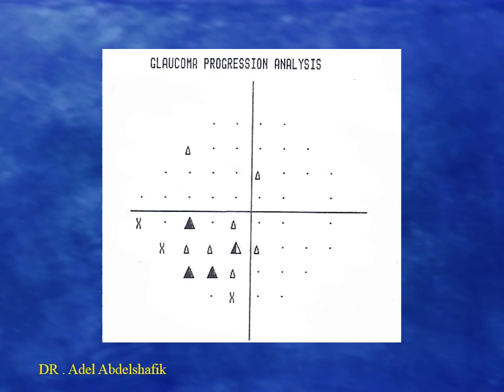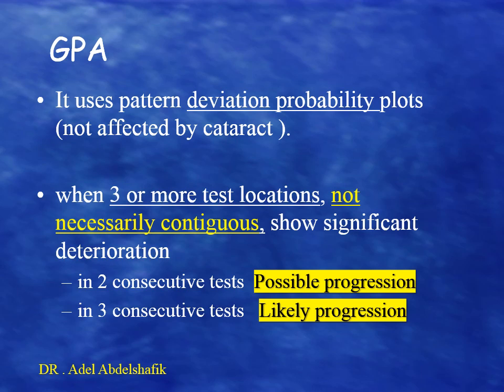This is an example showing white triangles, half-dark, and full-dark triangles. The glaucoma progression analysis uses the pattern deviation probability map for its calculation, so it is not affected by cataract. When three or more test locations — not necessarily touching one another — show significant deterioration in two consecutive tests, a label of 'possible progression' appears. If those three points show changes in three consecutive tests, the label becomes 'likely progression.'